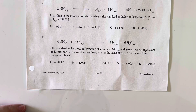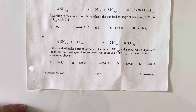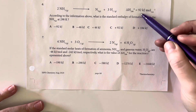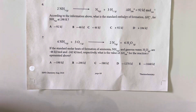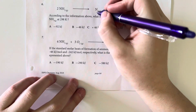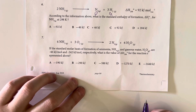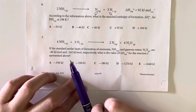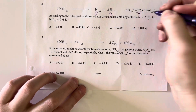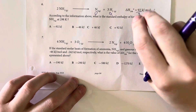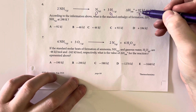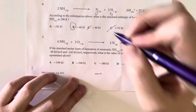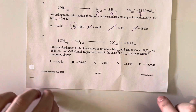According to the information above, what is the standard enthalpy of formation, delta H formation, for ammonia at 298 Kelvin? The delta H is 92 kilojoules — this is the total delta H. These are going to be zero since they are elements, and we have two moles, so this is going to be divided by two. Since we are asking for the reverse of this reaction, we inverse the sign, and dividing by two leaves me with answer choice B.